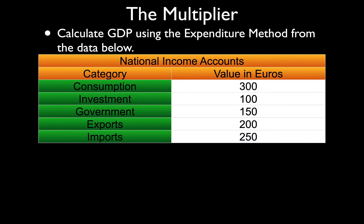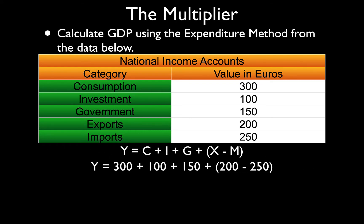Keep in mind that there are three ways to calculate national income. One of them is you add up total expenditure. We know that aggregate demand is made of consumption, investment, government expenditure, and exports minus imports. To calculate national income, we add up all the injections — consumption, investment, government expenditure, exports — and we take away imports.